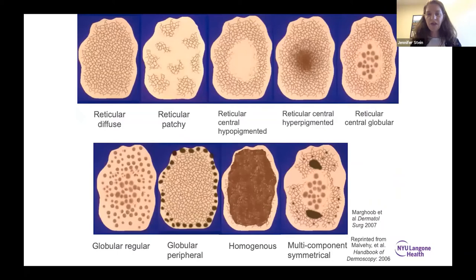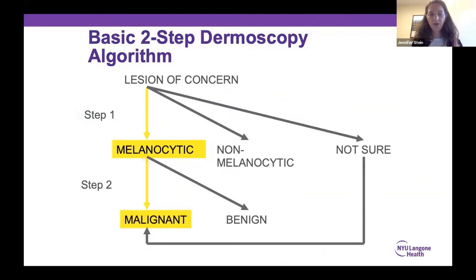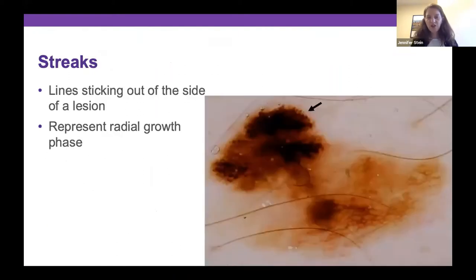Those are your benign patterns. As long as everything looks nice, orderly, and uniform — no melanoma features — and looks kind of like everything else on your patient, you're reassured. Now let's talk about worrisome features that, once you've decided something is melanocytic, will take you into the worried-about-melanoma pathway. The features to watch out for are: streaks, blue-white veil, peppering, angulated lines, and shiny white perpendicular lines. Streaks are lines sticking out of the side of the lesion — they represent a radial growth phase. This melanoma is on the move. Bad news.